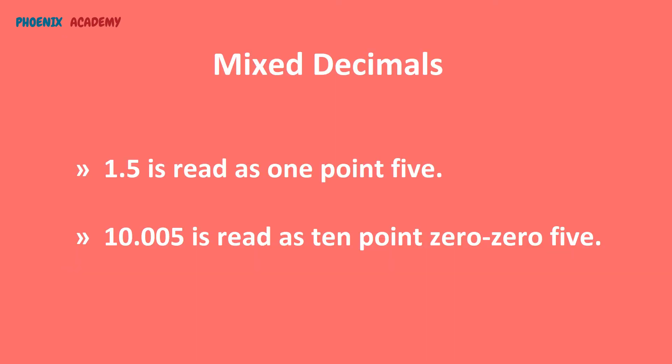Mixed decimals: when there is a whole number placed to the left of the decimal point, that decimal is called a mixed decimal. Decimals have two parts: a whole number part and a decimal part. For example, this number is written as 1.5 and the second number is written as 10.005. The number of digits after the decimal point is known as the number of decimal places.